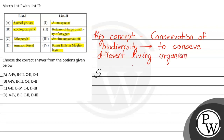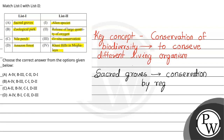First is Sacred Groves. Sacred Groves are actually conservation of biodiversity on a religious basis. A place is declared religious — it is sacred — so this is conservation of biodiversity by religious basis. People are told that there is something religious here.